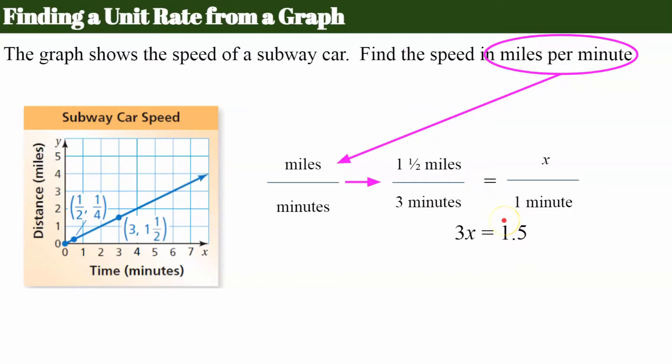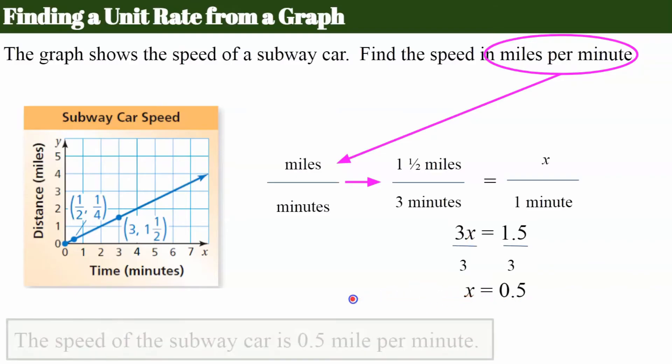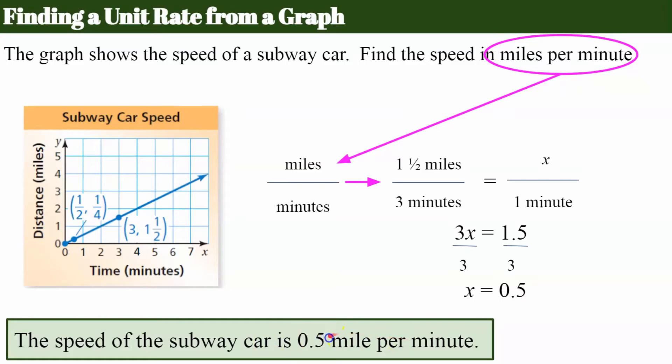One and a half can be written as 1.5. Now we can solve our equation dividing both sides by three to undo multiply by three, and X is equal to 0.5. So to answer the question that I was asked, the speed of the subway car is 0.5 mile per minute, so a half a mile per minute.